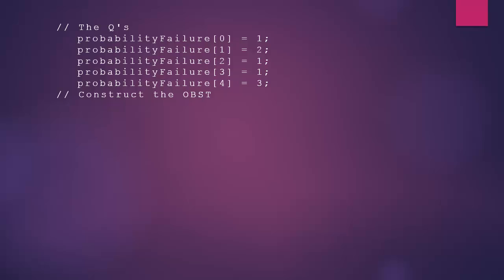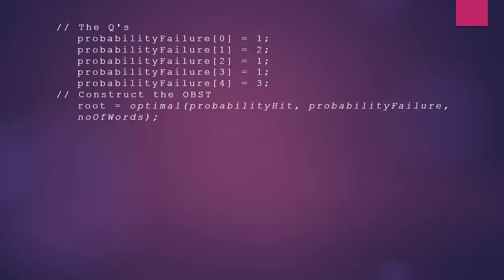The probability failures are five values — because when you create a binary search tree there are always failures equal to one plus the number of hits. If there are four nodes there are five failure nodes; draw it on paper and you'll see why it's five and not four. Then we call the function named 'optimal' passing in probability_hit, probability_failure, and number_of_words as parameters.